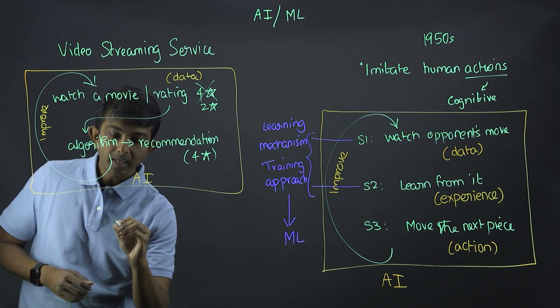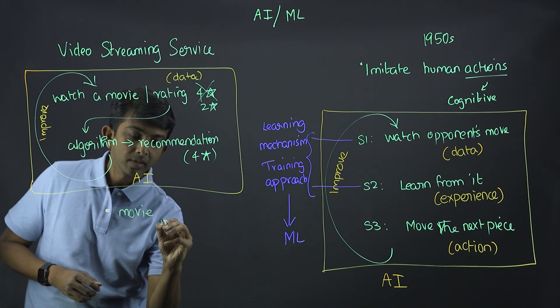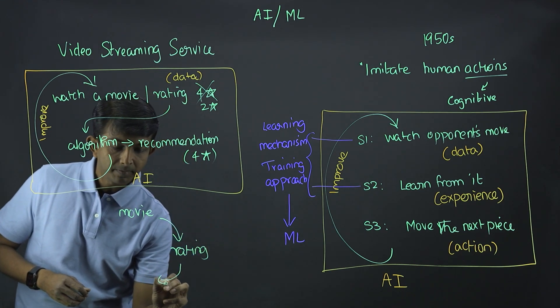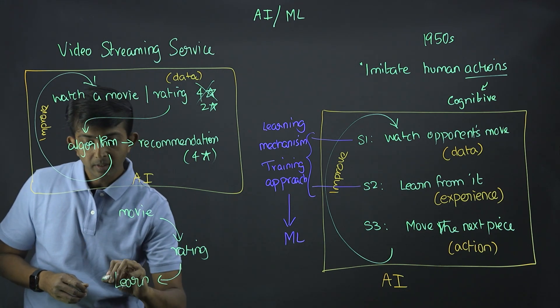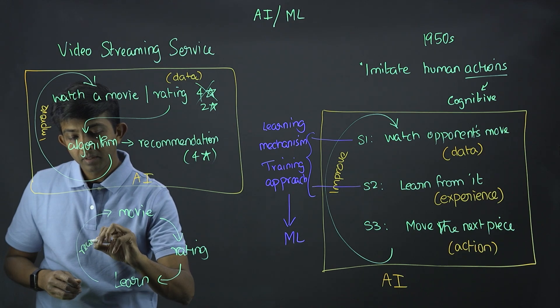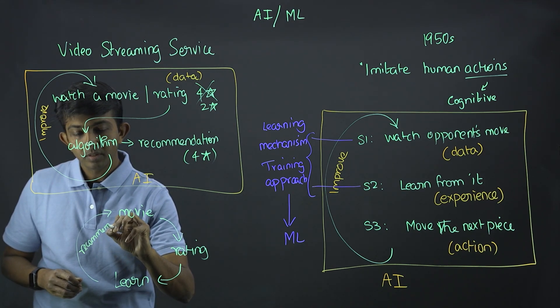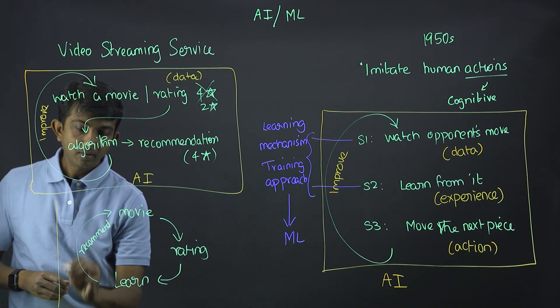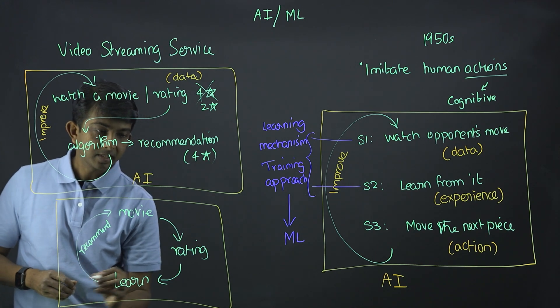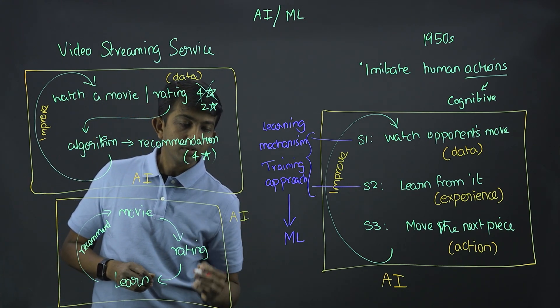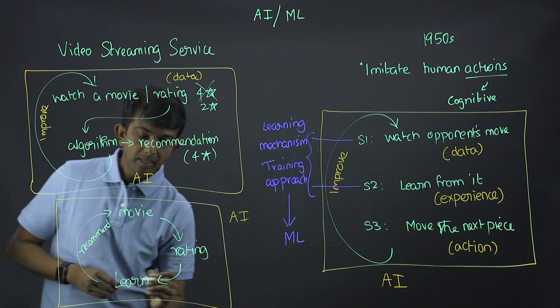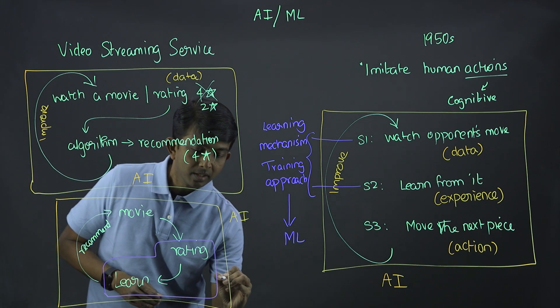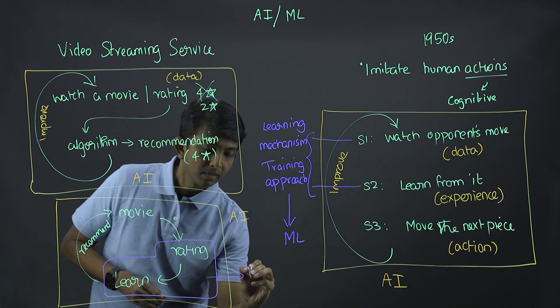Now, so what we have here is, we have a movie where we provide the rating, and then based on the rating, you learn from it, and then you provide recommendation. So as I mentioned, this whole system would be an AI system. And this little part where you're actually looking at the data and learning is called machine learning.